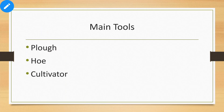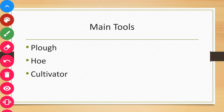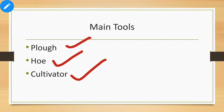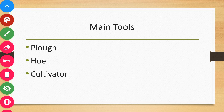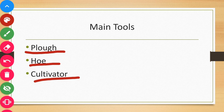Implements means main tools. In the preparation of soil, we mainly use three tools. The first one is Plow, the second one is Hoe, and the third one is Cultivator. These are the main three tools we use in the preparation of soil method.